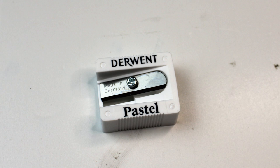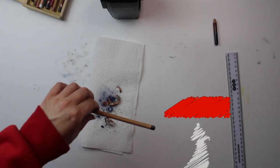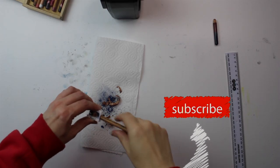The second sharpener I'll talk about is the Derwent pastel sharpener. This is really good to use if your pastel or charcoal pencils are a softer type.